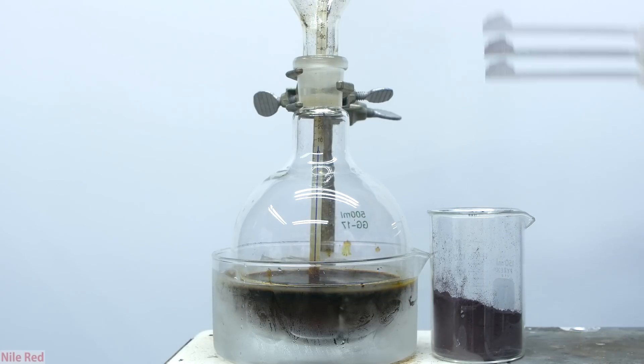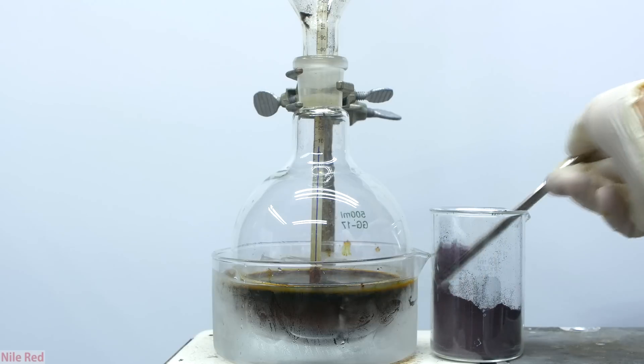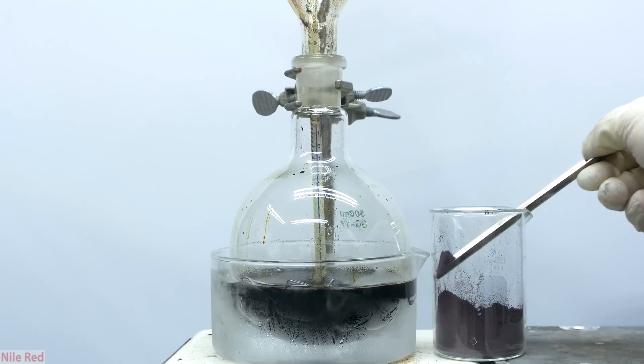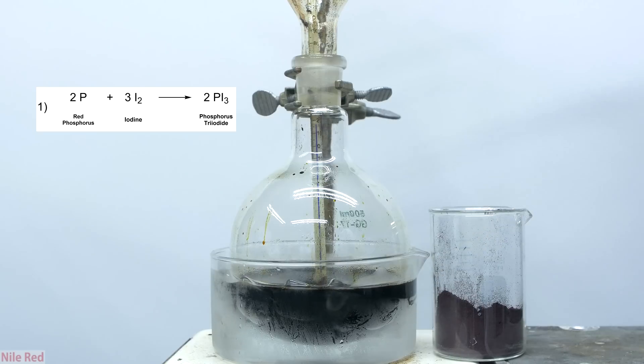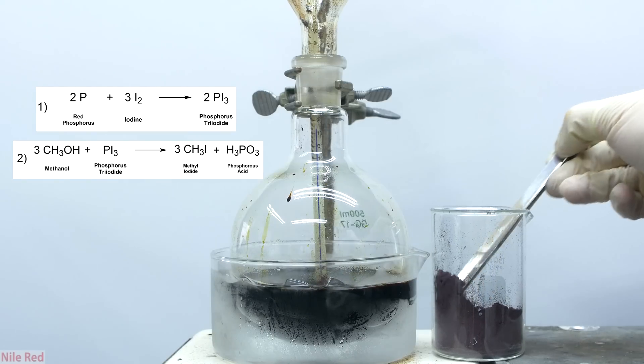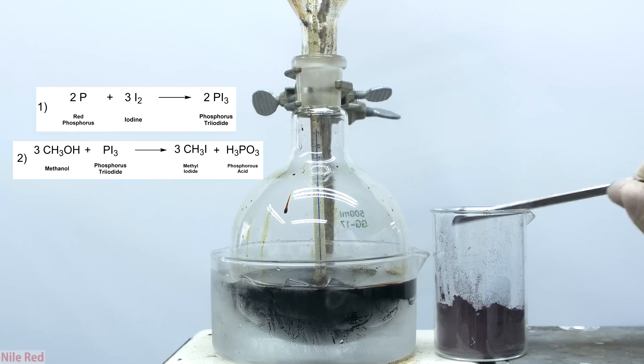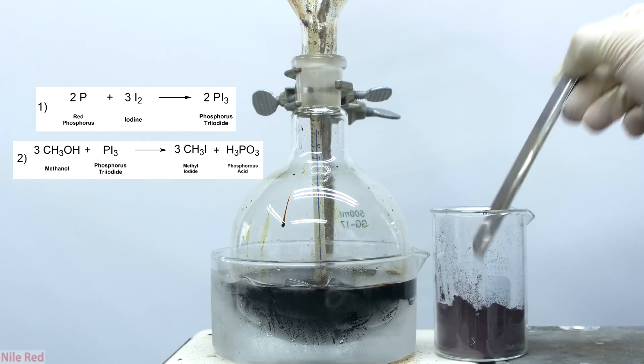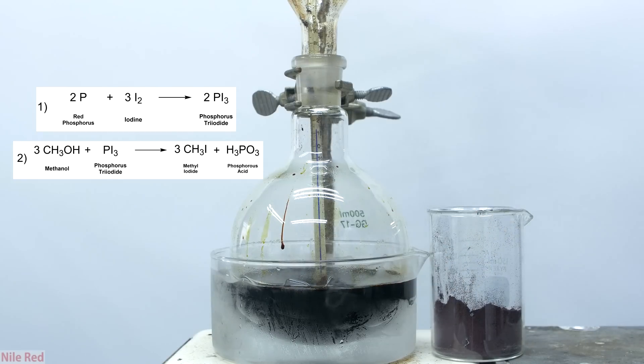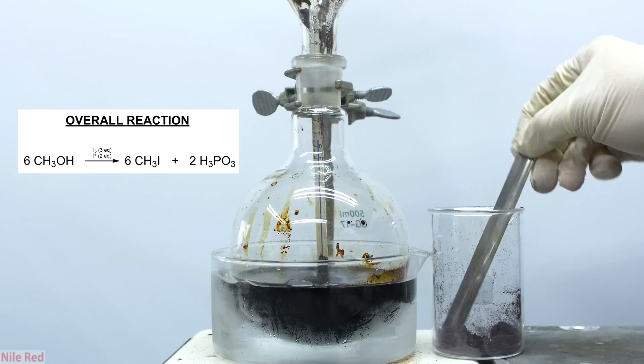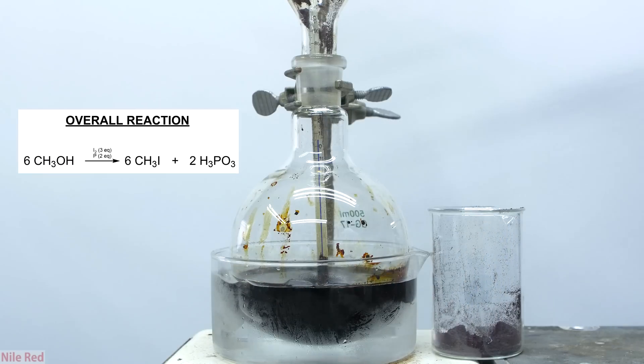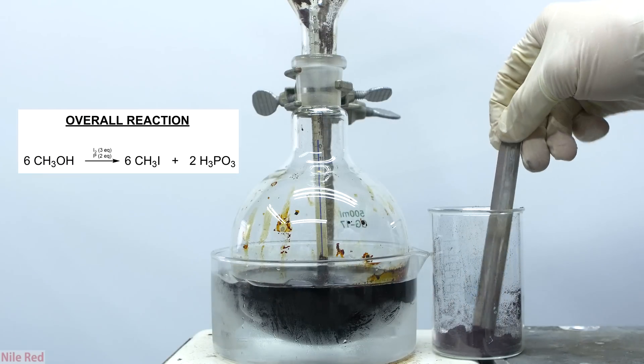While we're adding all the red phosphorus, I think it's a good time to talk about the reaction that's taking place. When the red phosphorus is added to the mixture, the first reaction to take place is between the phosphorus and the iodine to form phosphorus triiodide. The phosphorus triiodide is extremely reactive and immediately reacts with the methanol to produce our methyl iodide as well as phosphorus acid as a side product. Both of these reactions can be pretty easily simplified into one chemical equation, and I've included that here as well.